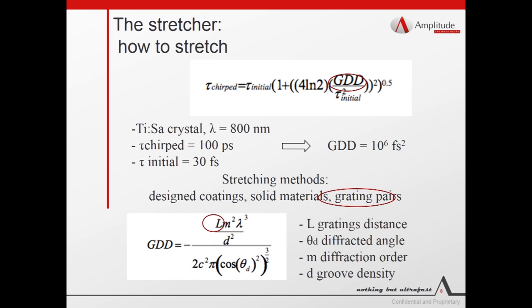There are three methods to introduce positive chirp: specially designed coatings, solid materials, and grating pairs. Recalling the example of a 400 picosecond chirp pulse, we would need a group delay dispersion of about 10^6 femtoseconds squared that only grating pairs can provide. To determine the parameter for building this kind of stretcher, we can use a formula. This formula relates the group delay dispersion to the grating distance, the diffracted angle, the diffraction order, and the groove density. Choosing a diffractive order of minus 1, a Littrow incidence angle, and given the groove density, the most important parameter to play with for scaling the group delay dispersion is the distance between the gratings.